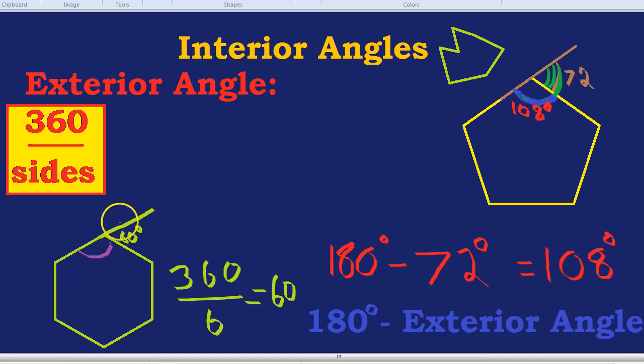All of the interior angles would be 180 take away 60, which is 120. So they would be 120 degrees. Let's check out another shape.